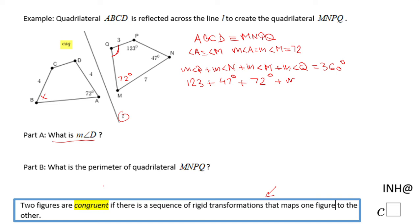We can find the measure of angle Q, or call it x if you want. I'm going to add the first three numbers: 123 plus 47 plus 72, and I end up with 242 degrees plus the measure of angle Q equals 360.